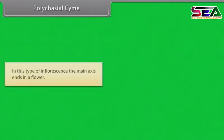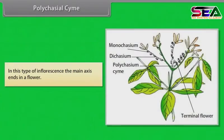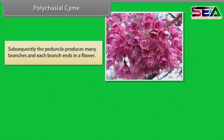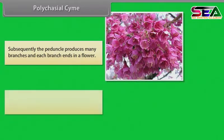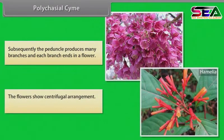In polycasial cyme, the main axis ends in a flower; subsequently the peduncle produces many branches and each branch ends in a flower. The flowers show centrifugal arrangement. Example: Hamelia.